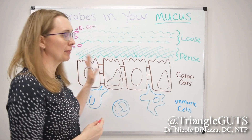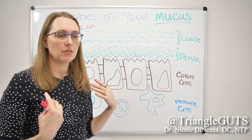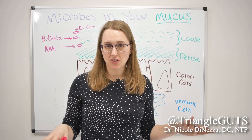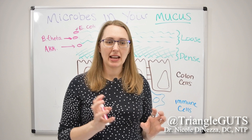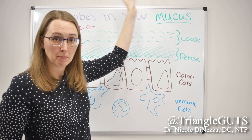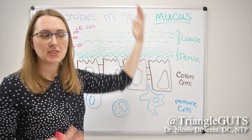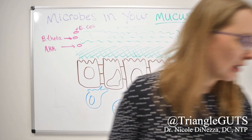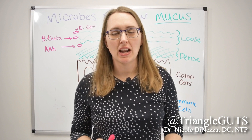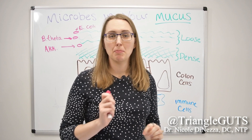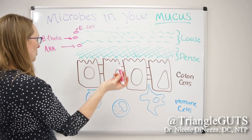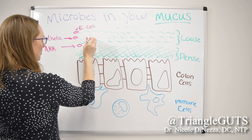All three of these — Akkermansia, E. coli, and B. theta — are gram-negative bacteria. It seems like that's what the mucus layer is favoring a little bit more versus Firmicutes, which are gram-positive. That's more of the pattern I've seen in research. The exception is that Bifidobacterium bifidum also does seem to like hanging out in the mucus.